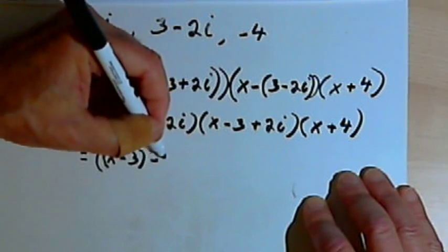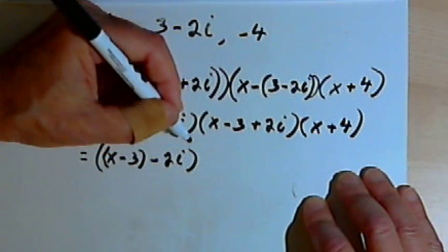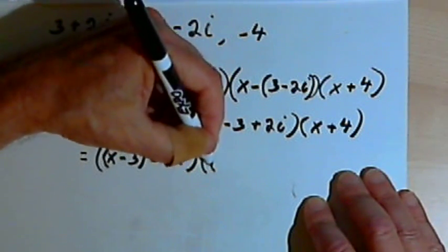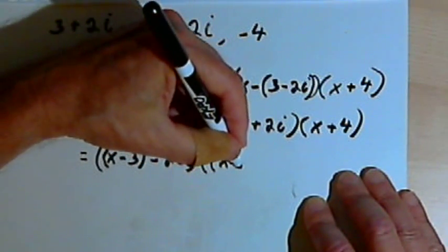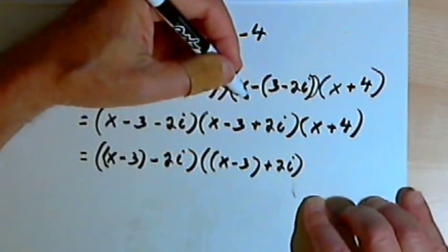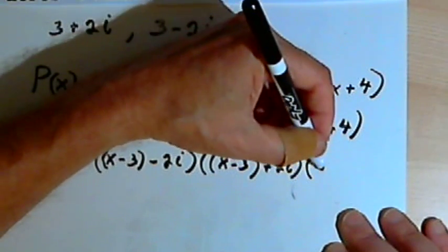I'll take the next factor and once again I'll separate out that x minus 3, and I'm going to have plus 2i. And then I've got the last factor, which is x plus 4.